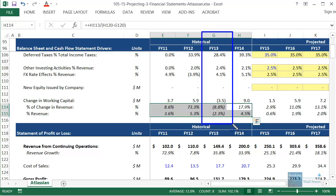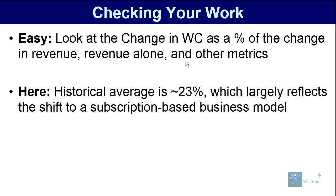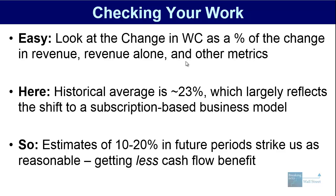2013 was a bit of an exception, but other than that it seems like this company has a slightly positive change in working capital as a percent of the change in revenue. The historical average is 23%, mostly because they are switching to a subscription-based business model and have very little in terms of inventory requirements. So we think our estimates of 10%–20% in future periods are reasonable — we are getting some cash flow benefit as we grow, but not a huge benefit like 30%–40%; it's more like 10%–20% of the increase in revenue each year.